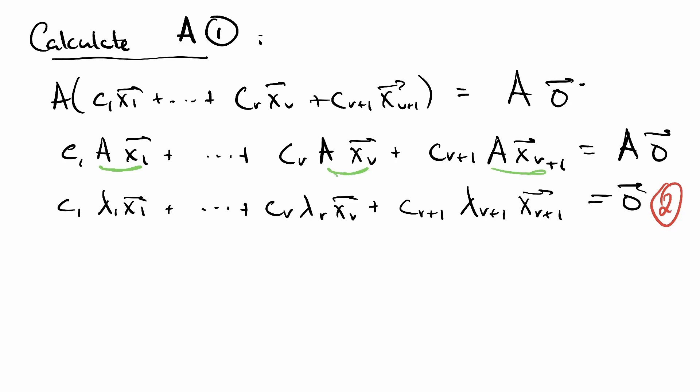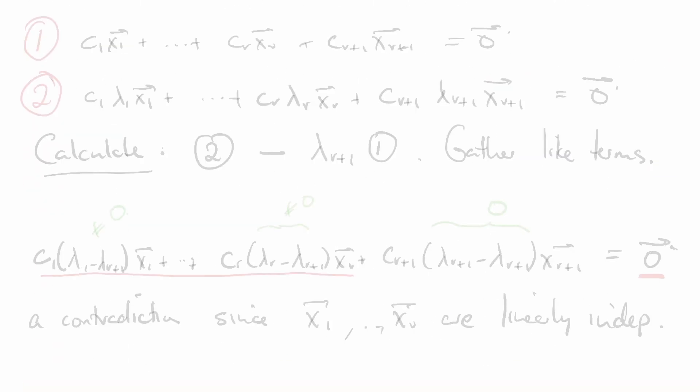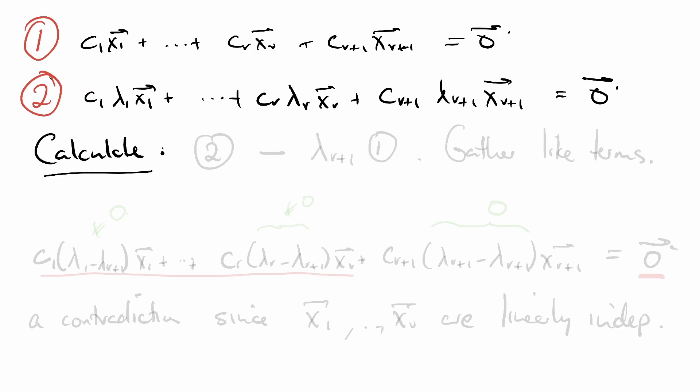We're going to put 1 and 2 together. Just to remind you, equation 1 is c₁x₁ plus cᵣxᵣ plus cᵣ₊₁xᵣ₊₁ equals the zero vector, and equation 2 is c₁λ₁x₁ plus cᵣλᵣxᵣ plus cᵣ₊₁λᵣ₊₁xᵣ₊₁ equals the zero vector. We're going to calculate 2 minus λᵣ₊₁ times 1, and we're going to gather the like terms.